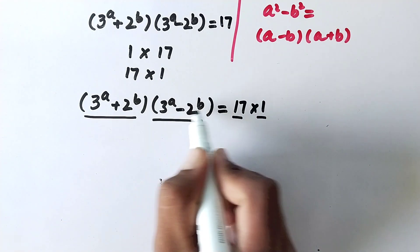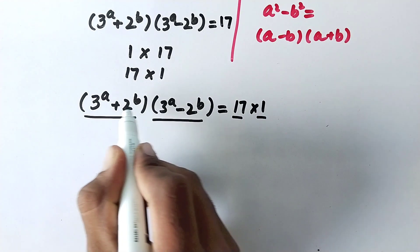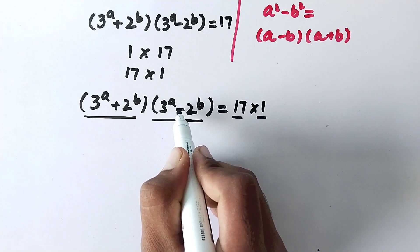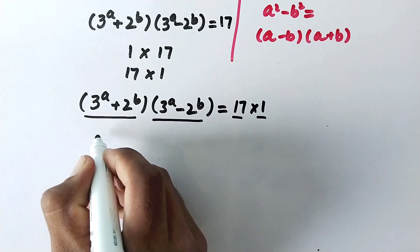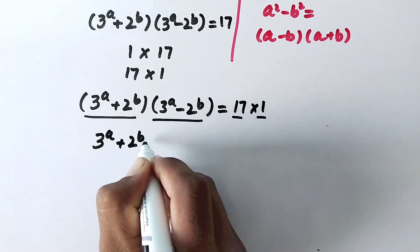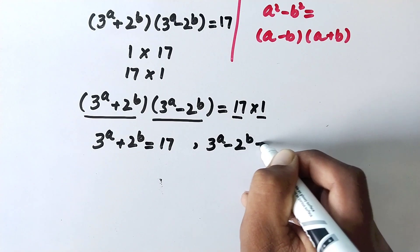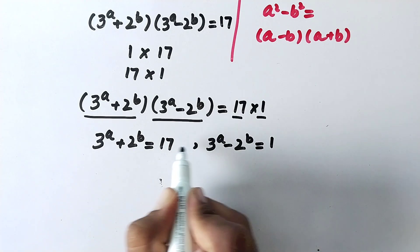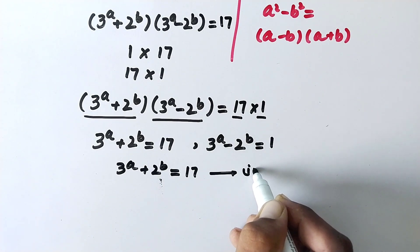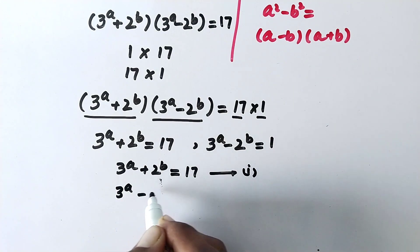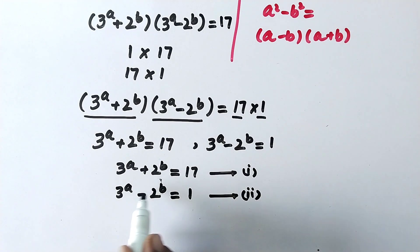We will equate the factors. Since these two values are being added and subtracted, the sum must be greater than the difference. Therefore the addition equals 17 and the difference equals 1. So we write: 3 to the power a plus 2 to the power b equals 17 as equation 1, and 3 to the power a minus 2 to the power b equals 1 as equation 2.